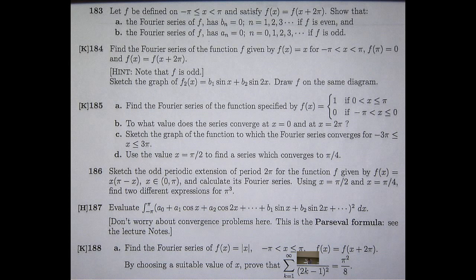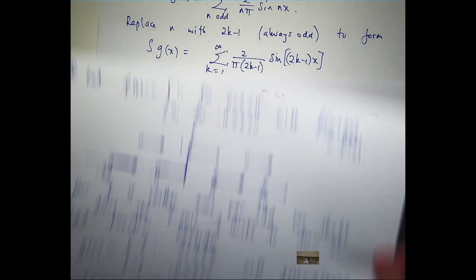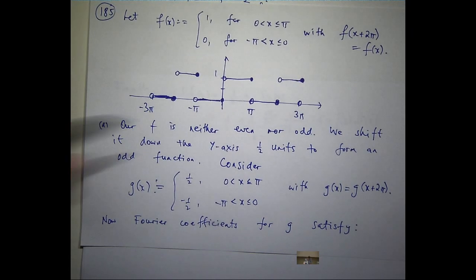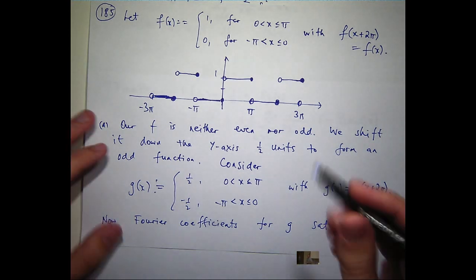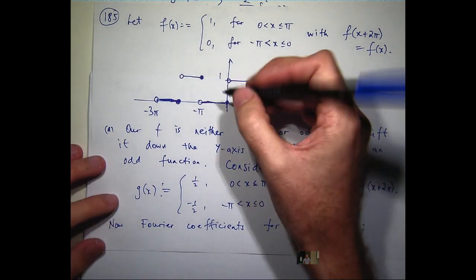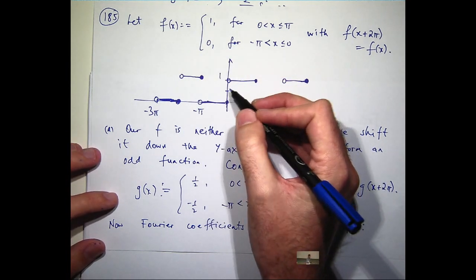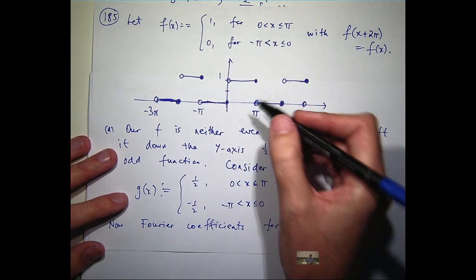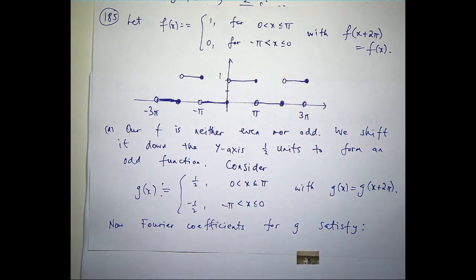To what value does the series converge at the point x equals 0 and the point x equals 2pi? Well, let's go and have a look at our graph. At x equals 0, is the function, so this is the graph of f here, is the function f continuous at x equals 0? Yes or no? No.